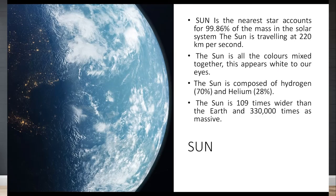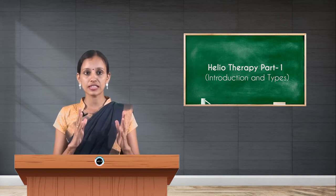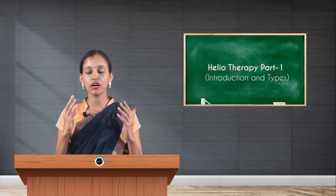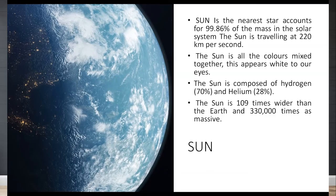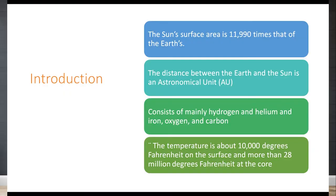The sun is the nearest star — it accounts for 99.8 percent of the mass in the solar system and travels at 220 kilometers per second. Sunlight appears white to our naked eyes because of the mixing of all different colors. The sun is mainly composed of 70 percent hydrogen and 28 percent helium, and it is 109 times wider than Earth and 330,000 times as massive.